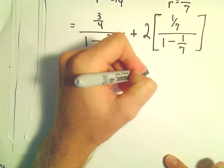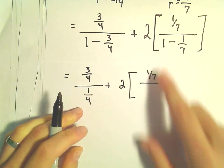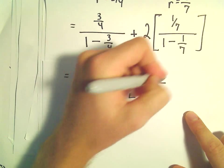We'll have 2 times, so that's 1 over 7. 1 minus a seventh is going to give us 6 over 7.